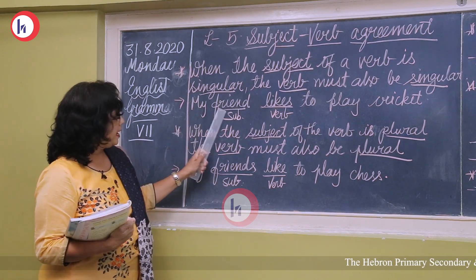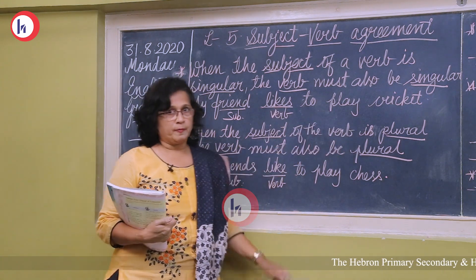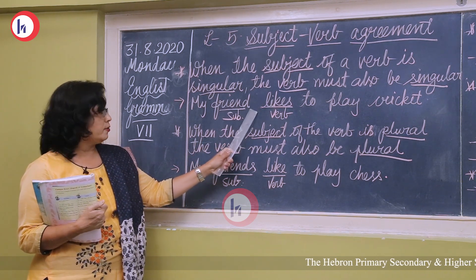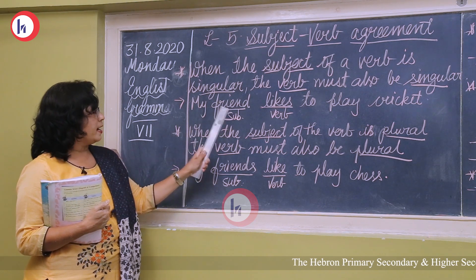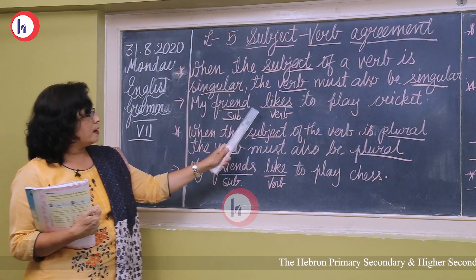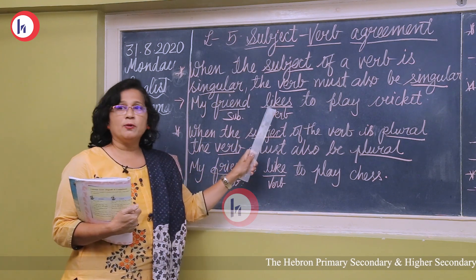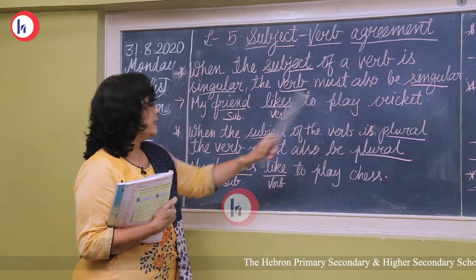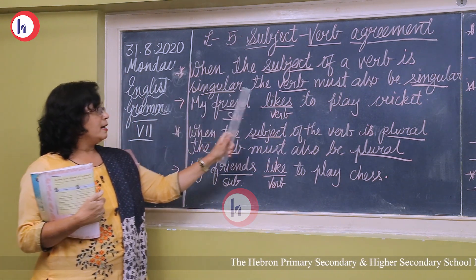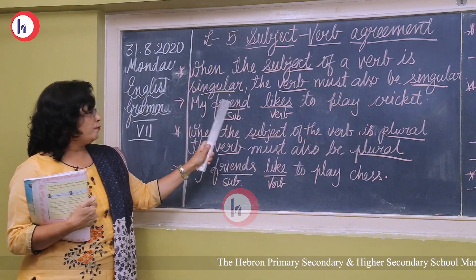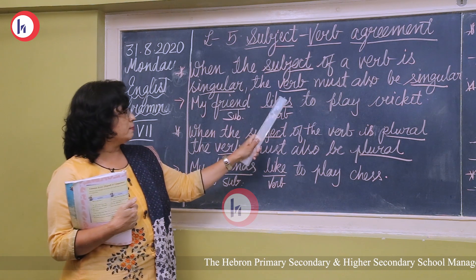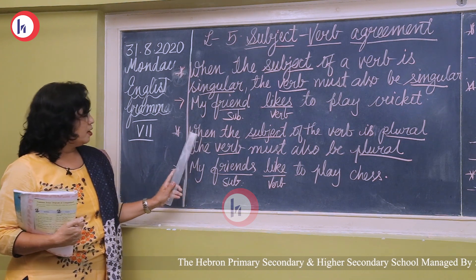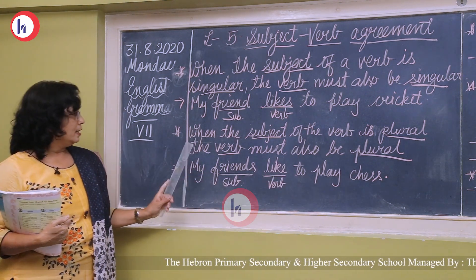Here, 'my friend likes to play cricket.' The subject is 'my friend' — friend is singular, not friends. That is why we use the singular verb 'likes.' The sentence 'my friend like to play' is wrong. Because 'friend' is a singular subject, we use 'likes' as the singular verb.